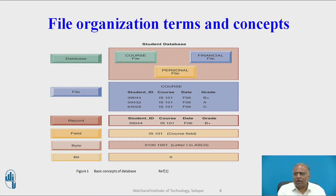This is the diagram of the file organization terms and concepts, where bit, byte, field, record, file, and database — all basic concepts of a database — can be shown. A bit is a single bit; then a byte can be defined; a field can be defined; then a record is a tuple or row. All the schemas or tables are stored in a file, and all the files are stored in the database.